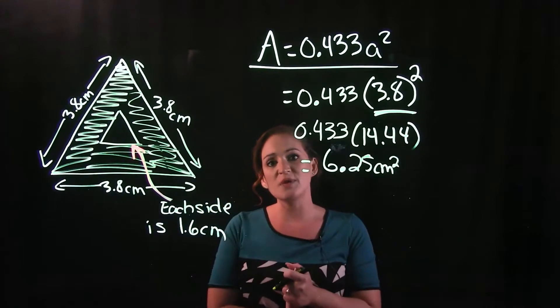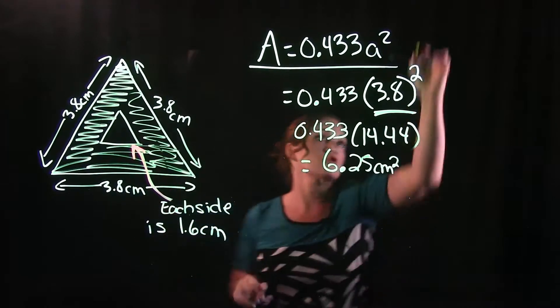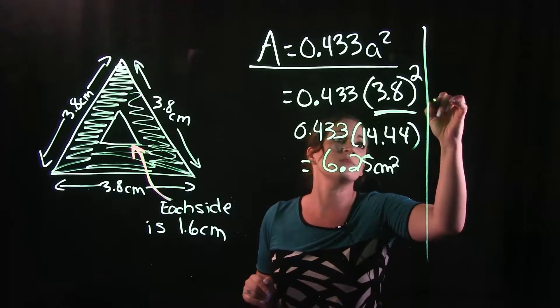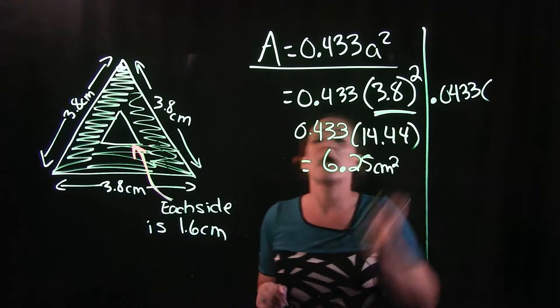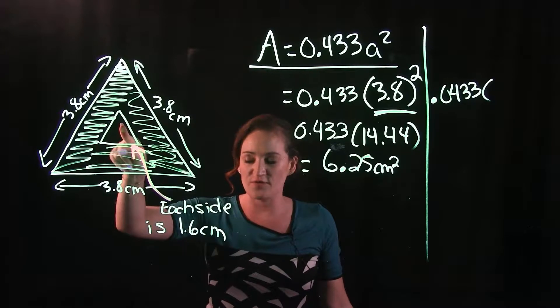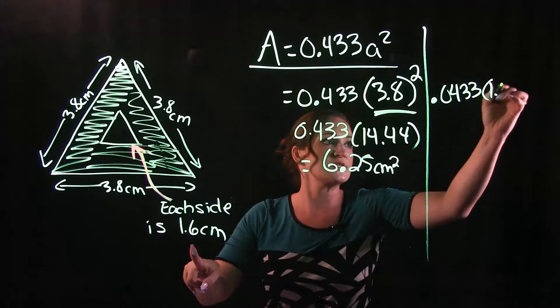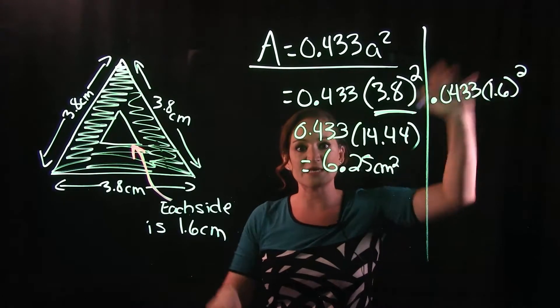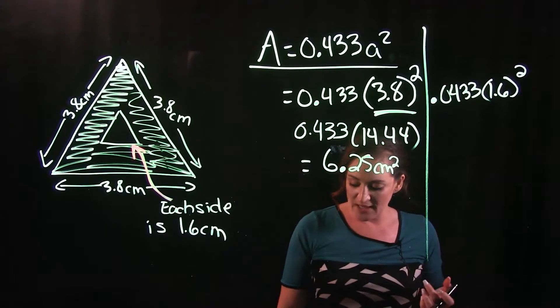But we need to pause. We need to find the area of the middle triangle. So, we're going to take the same formula, 0.433, and the side of one of our sides here for the middle one is 1.6. So, we would do 1.6 squared.